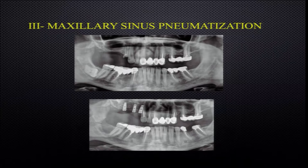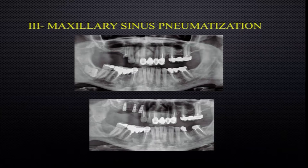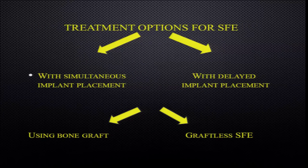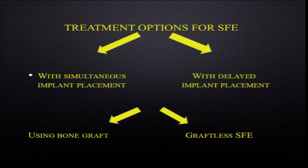Maxillary sinus pneumatization is the main problem we see in almost all posterior maxilla cases. In one particular case, we had an impacted tooth and used the bone above it — which would have been removed anyway — to graft the sinus with simultaneous immediate implant placement. Treatment options for sinus floor elevation include simultaneous implant placement or staged delayed placement, and can be done with a bone graft or as graftless sinus floor elevation.